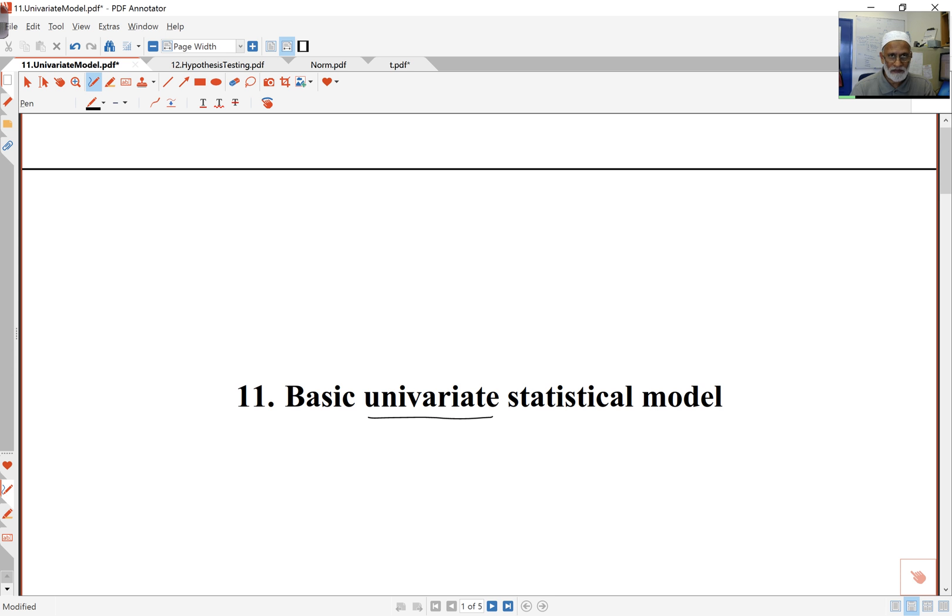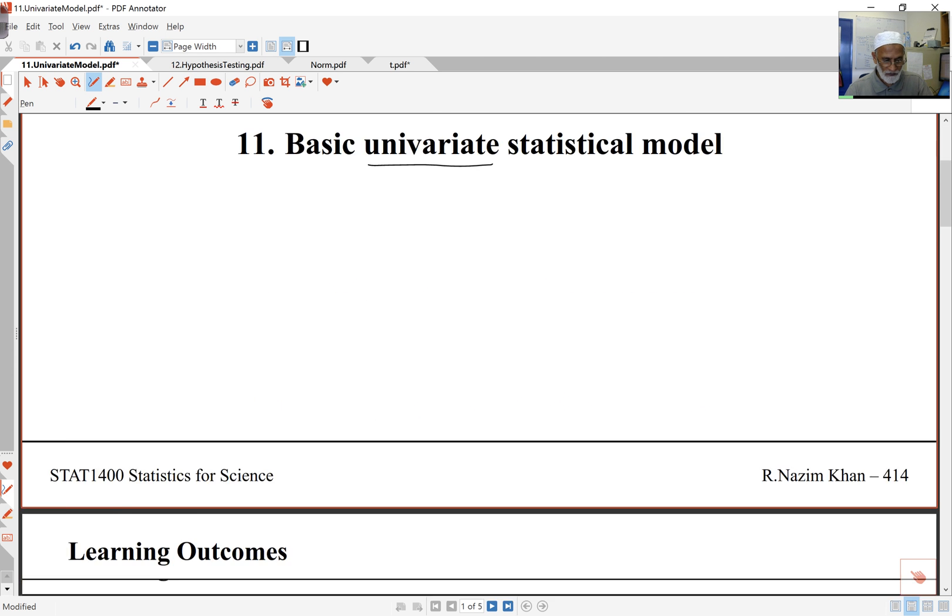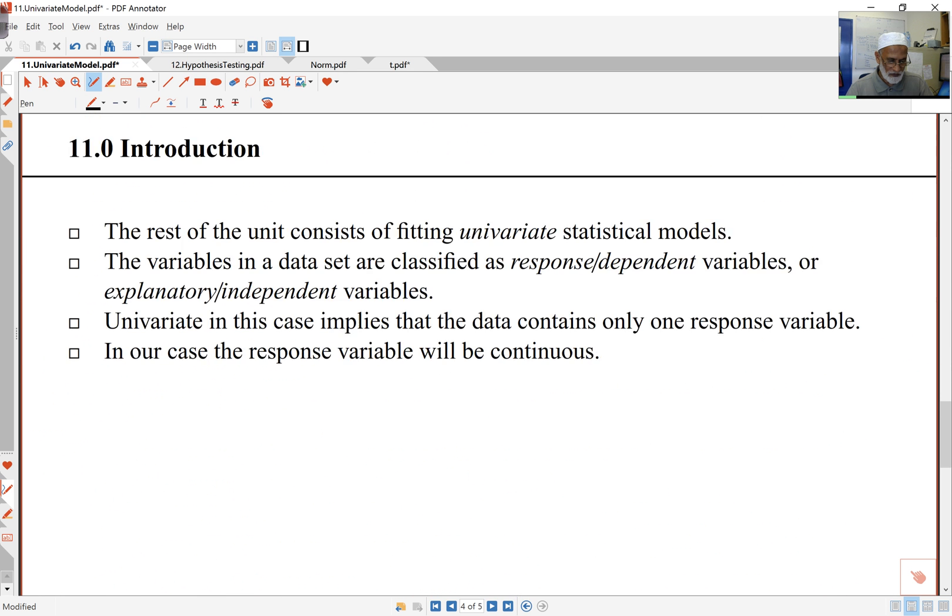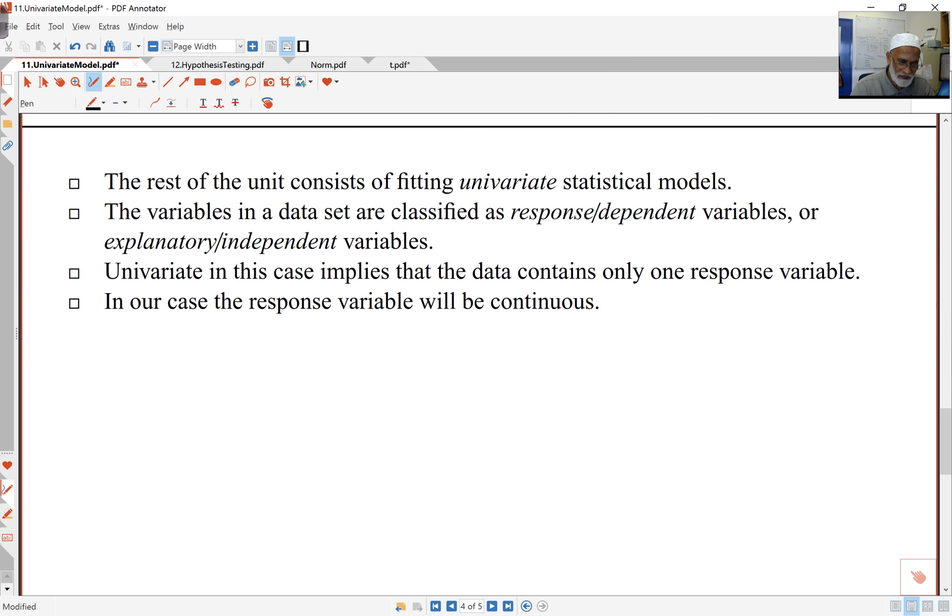Usually we have many measurements, but one of them we're treating as response. So the basic idea here is we have some response variable, which we call response or dependent, and all the other variables are called explanatory or independent variables.